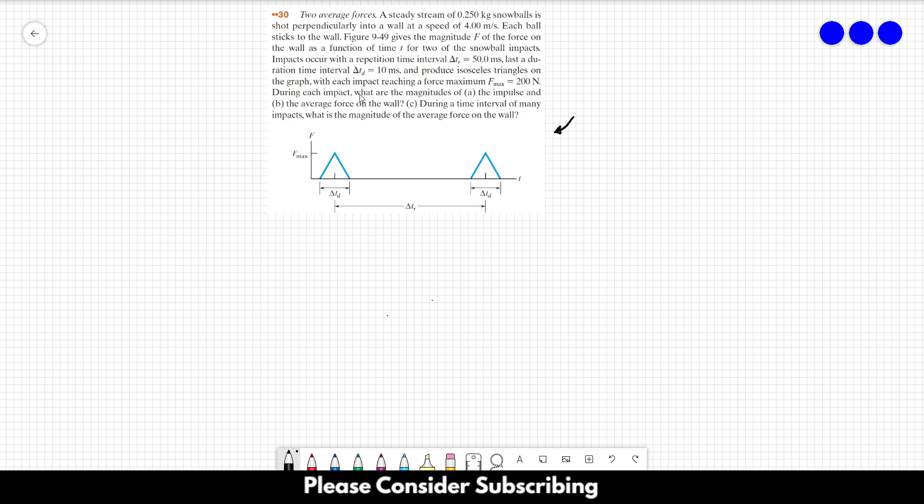During each impact, what are the magnitudes of letter A, the impulse, and letter B, the average force on the wall? Letter C, during a time interval of many impacts, what is the magnitude of the average force on the wall?